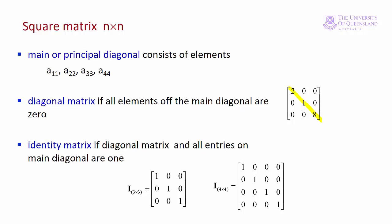If the off diagonal elements are all zero, as we have here, then we have a diagonal matrix. A special case of a diagonal matrix is where we have ones in the principal diagonal. This is the identity matrix. It acts like a one in scalar algebra.